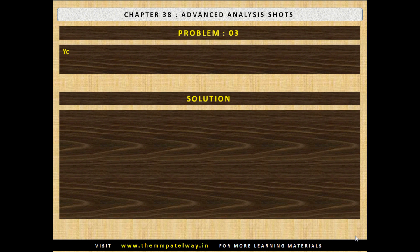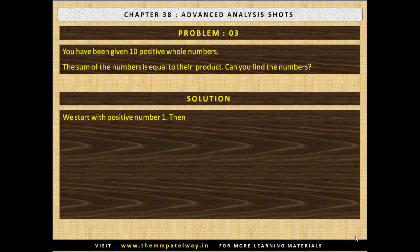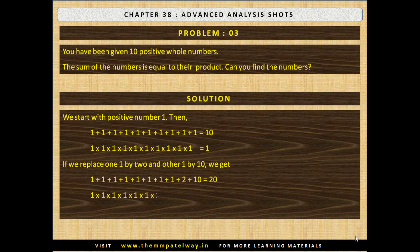Problem number 3. You have been given 10 positive whole numbers. The sum of the numbers is equal to the product. Can you find the numbers? We start with positive number 1. Sum of 10 ones equals to 10. If we multiply all ones then we will be getting 1 as a product. If we replace one 1 by 2 and other 1 by 10, we get a sum of 20 and at the same time a product of 20. This logic can be used for similar problems also.